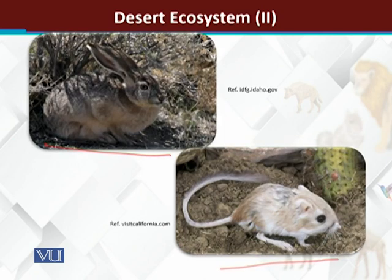Among the mammals there are jackrabbits and kangaroo rats. Mammals in deserts are mostly nocturnal in behavior — they feed and are active during the nighttime.